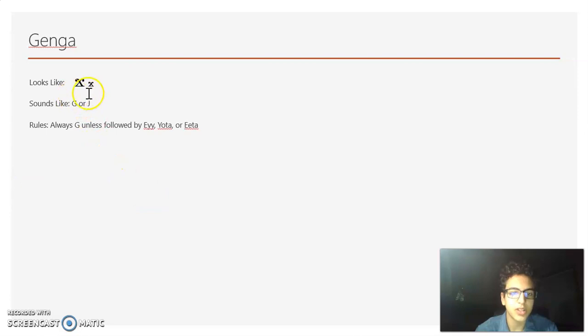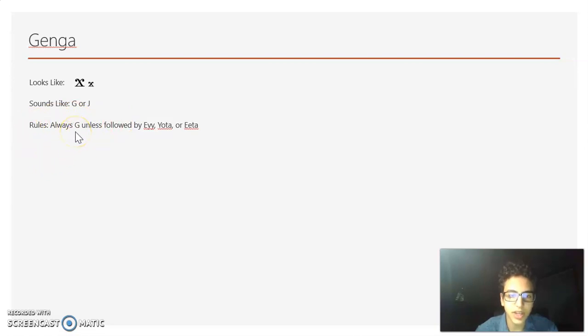Now we have Jenja. It can sound like a G or a J. It always makes the G sound unless it's followed by A, Jota, or Ita.